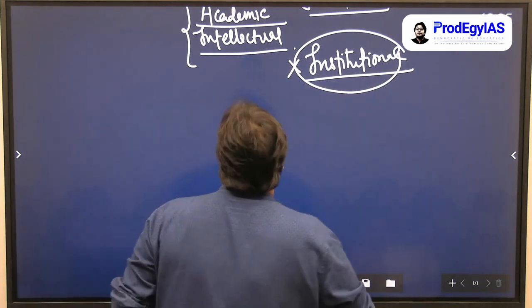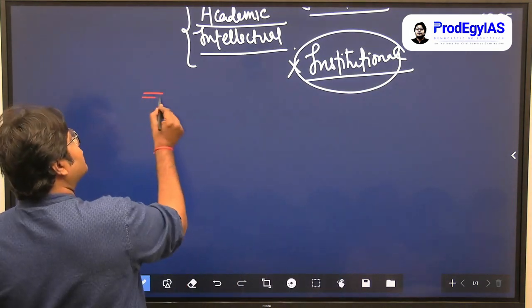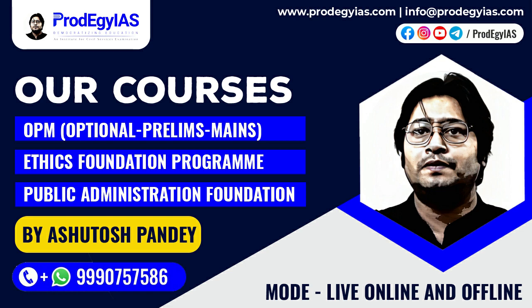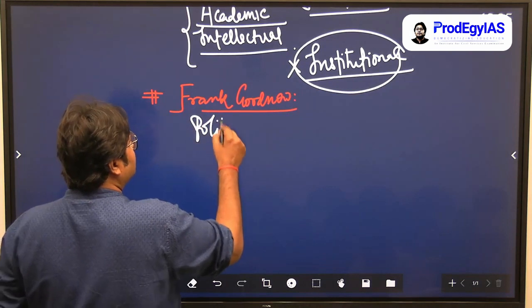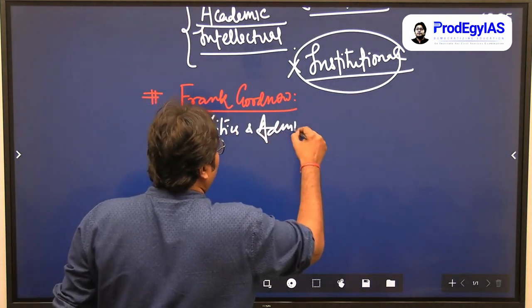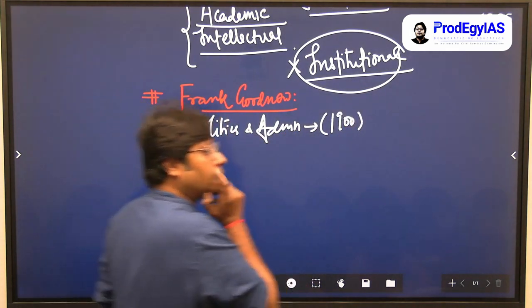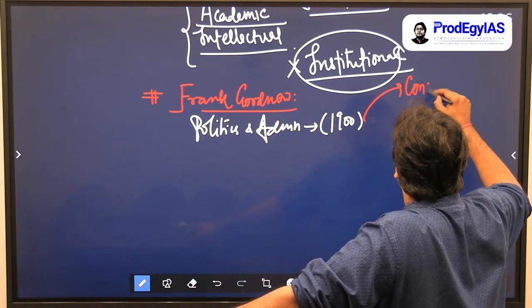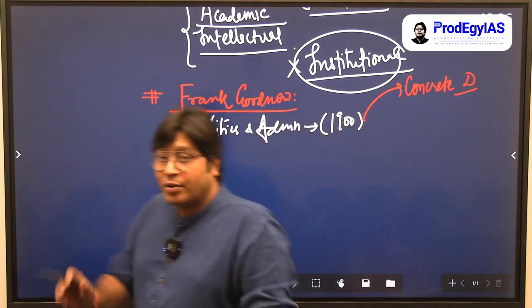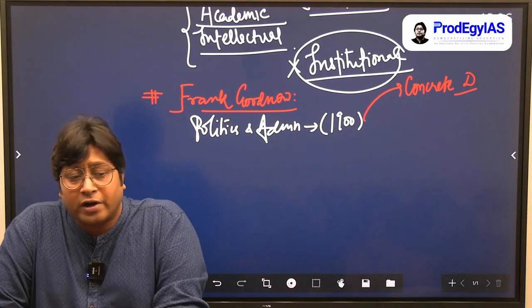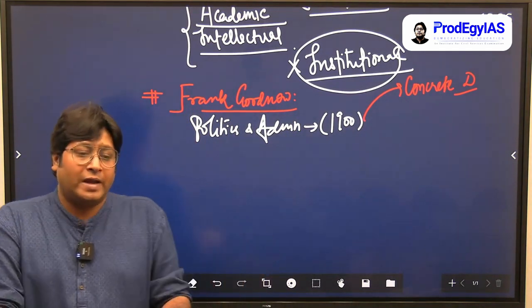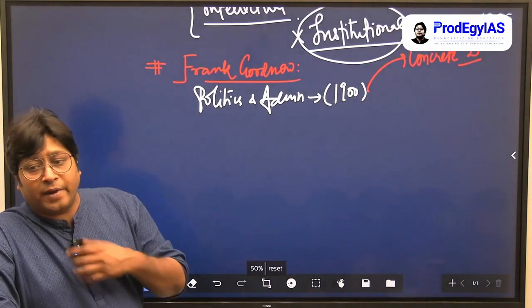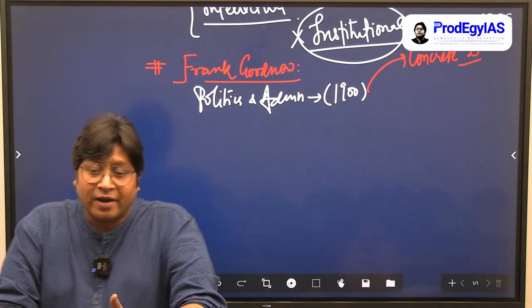Now let us understand this way. There comes another person - Frank Goodnow. He writes a book 'Politics and Administration' in 1900. From his writings starts the concept of concrete versus analytic. Concrete means what is practically possible; analytic means it is just theoretical. So when you make a timetable, it is an analytic timetable.